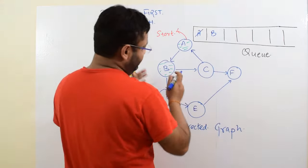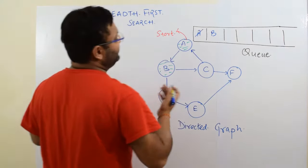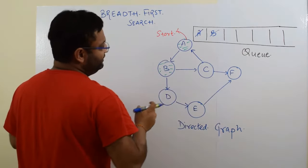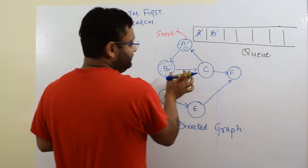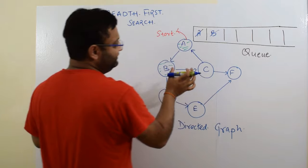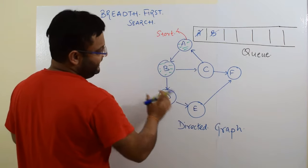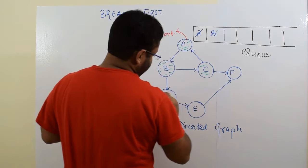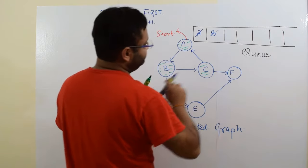Now B is in the queue. You dequeue B. Now see what are the neighbors of B which have not yet been visited? C and D. So you mark them as visited and push them into the queue.